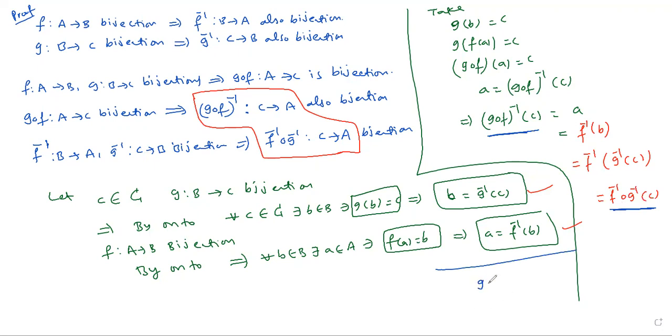That implies you can write G circle F whole inverse of C is equal to F inverse circle G inverse of C. That implies you can write G circle F whole inverse is equal to F inverse circle G inverse. Very important theorem and very easy.